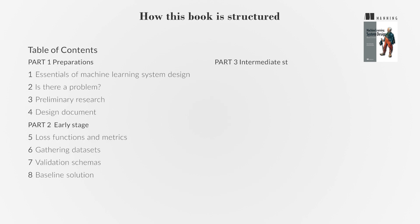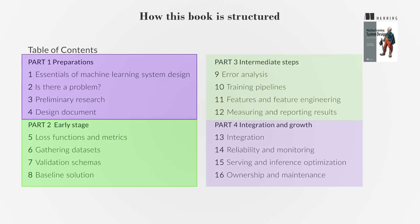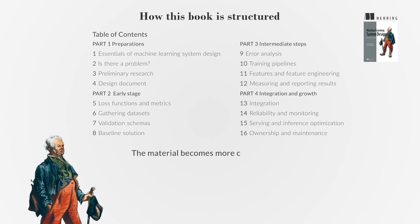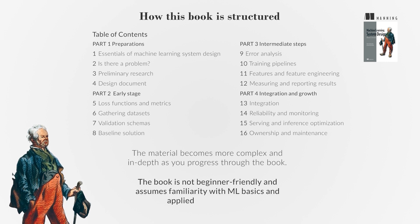This book provides a practical guideline for building ML systems in various domains. It is structured like a checklist or manual, with high-level checklist items that are mandatory for every ML system. It is divided into four parts that align with the life cycle of a system: creation, improvement, maintenance, and integration and growth. The material becomes more complex and in-depth as you progress through the book, which is not beginner-friendly and assumes familiarity with ML basics and applied programming.